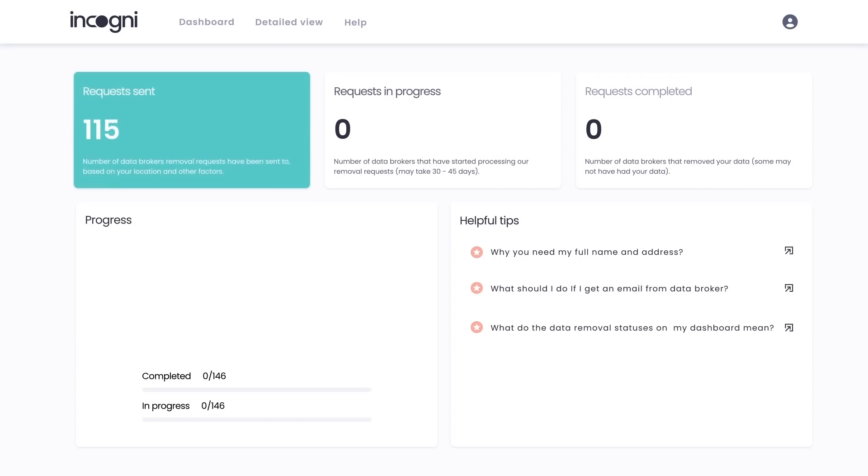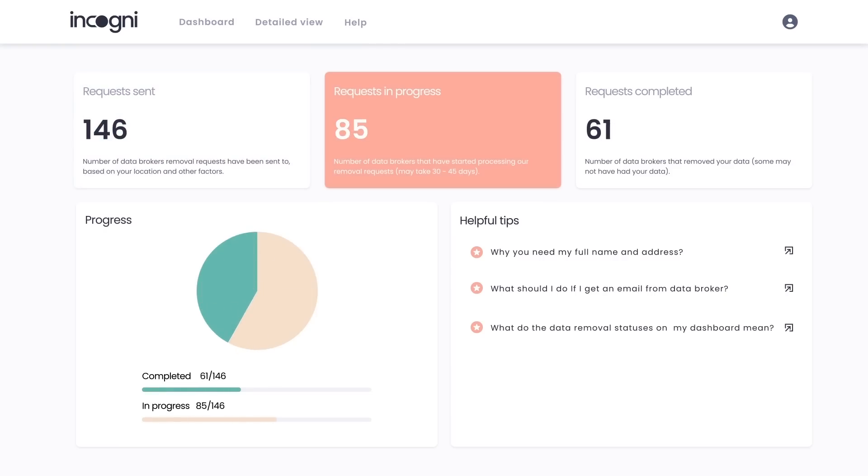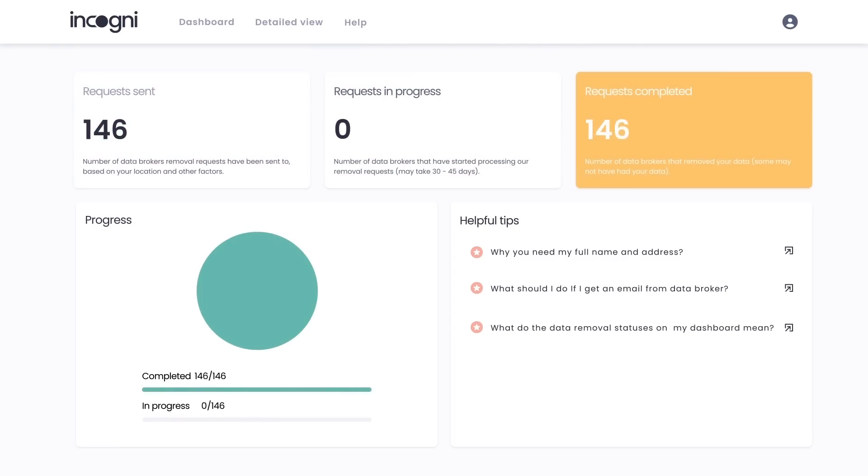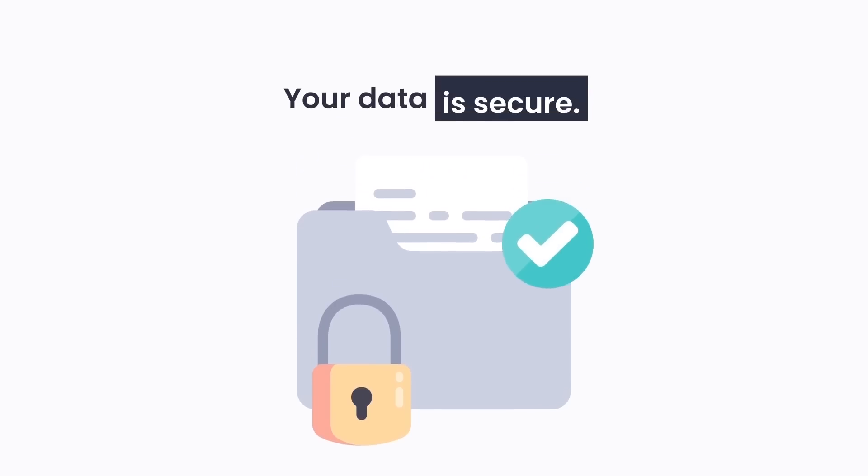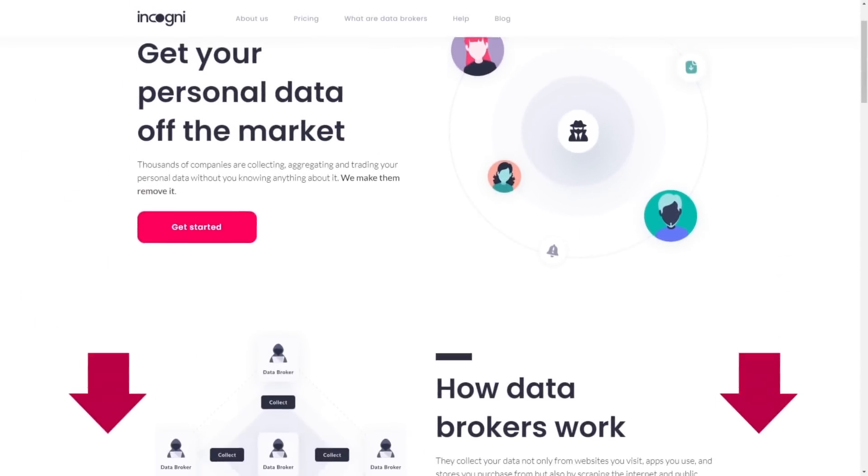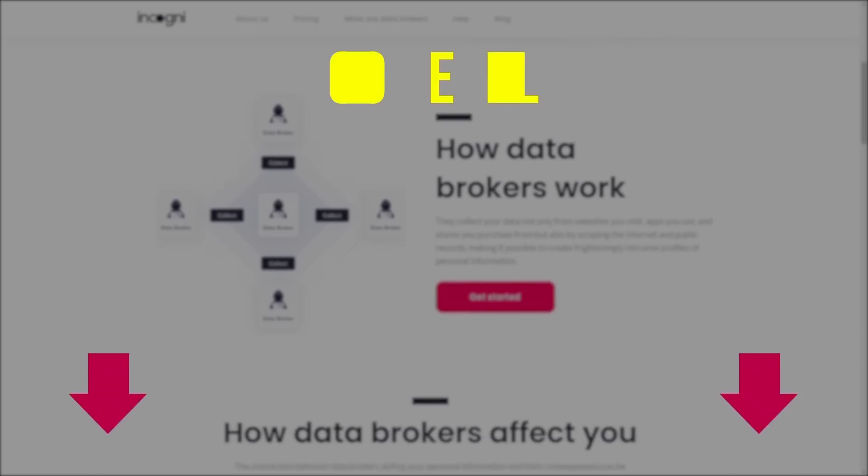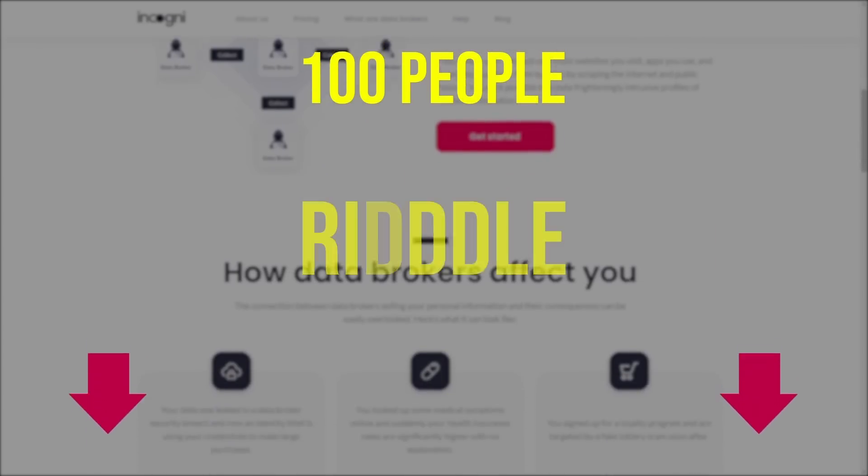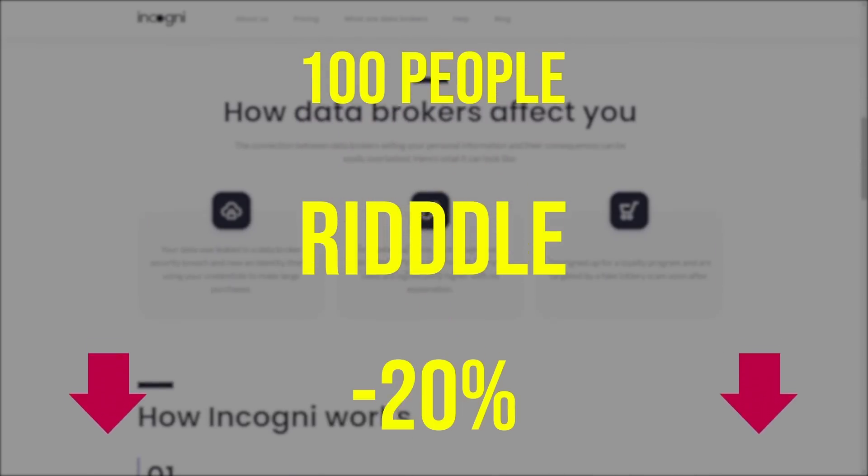But Incogni's algorithms know how to automatically send requests, deal with objections, and ensure your data doesn't end up in the wrong hands again. Click on the link in the description, sign up on Incogni, and the first 100 people who use the code RIDDLE will get 20% off on an Incogni subscription.